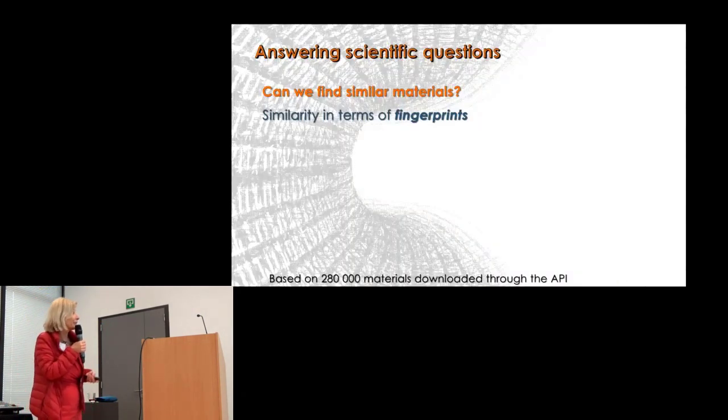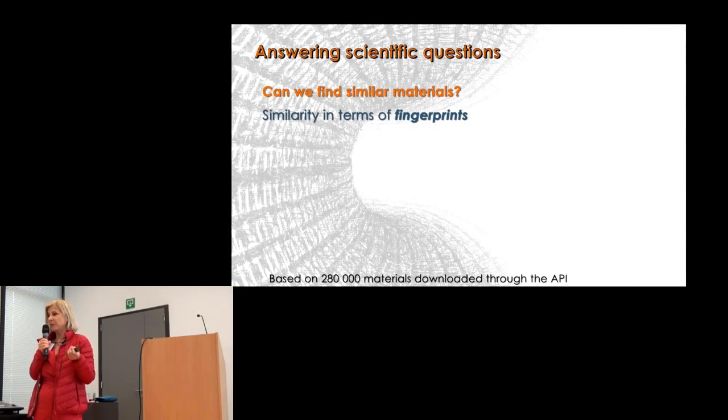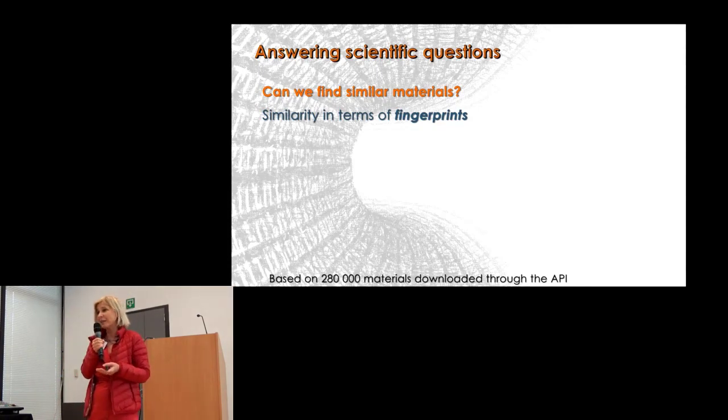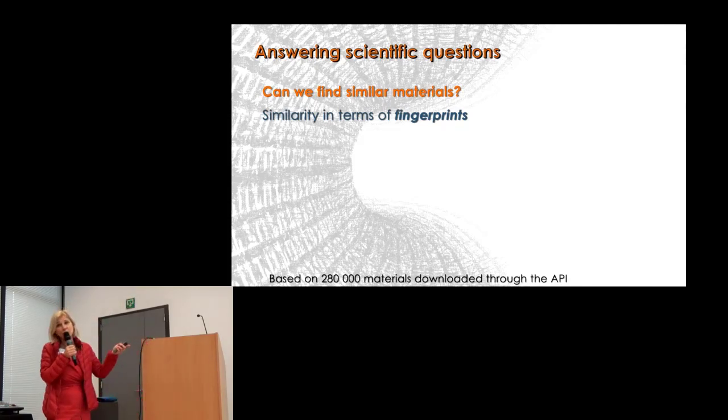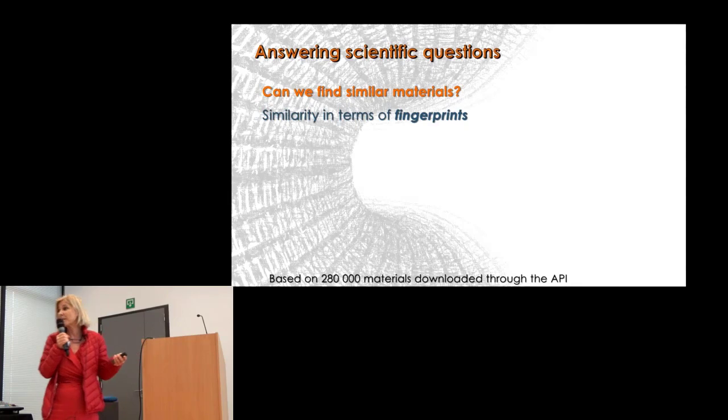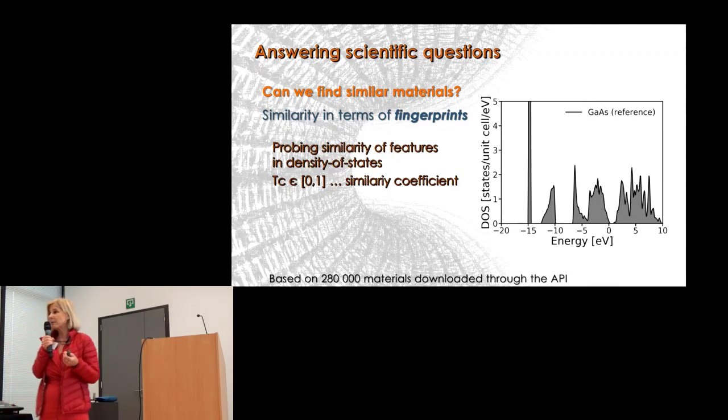A question we were asking was: given we have a material, can we find a similar material? Think about the problem that many materials are toxic. Our beloved perovskites all contain lead. Can we find something with the same electronic properties but without lead or any toxic element? I'm not going to show you halide perovskites because we don't yet have this amount of materials. We implemented fingerprints which give you materials most similar to the one you've chosen in terms of the density of states.